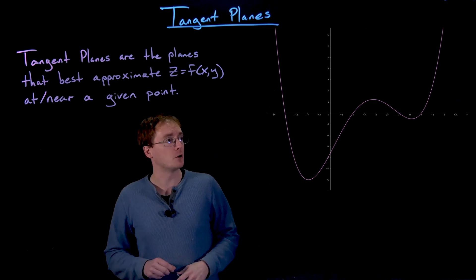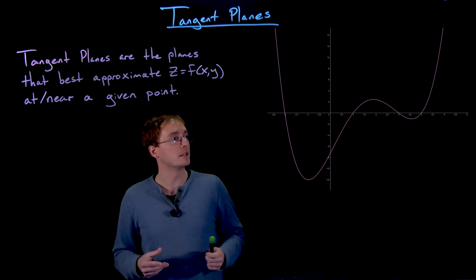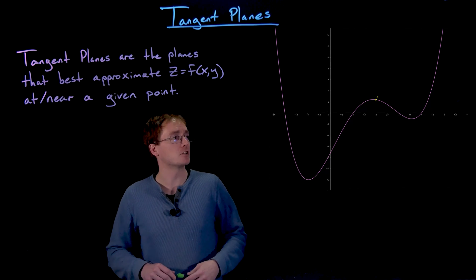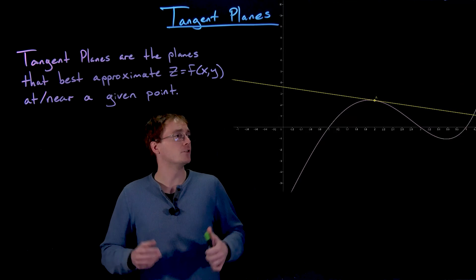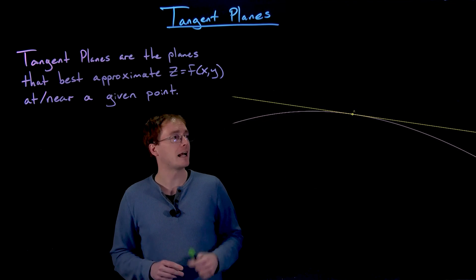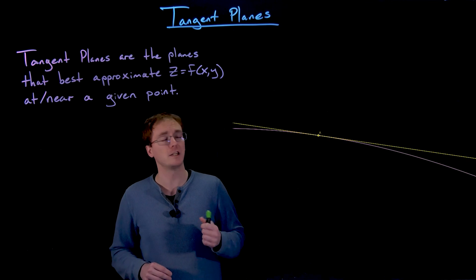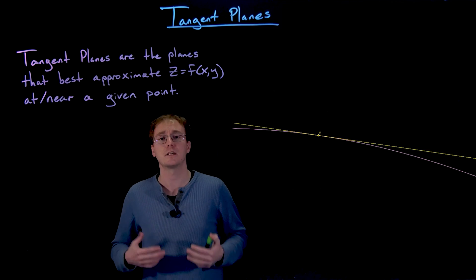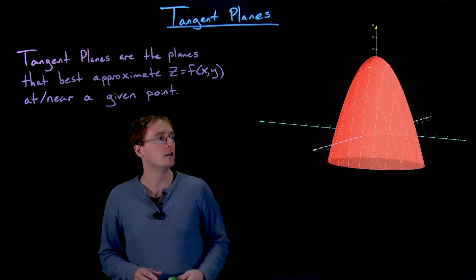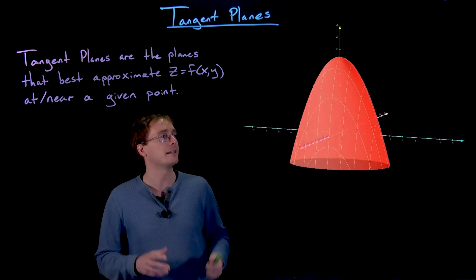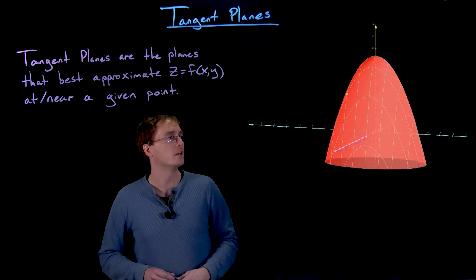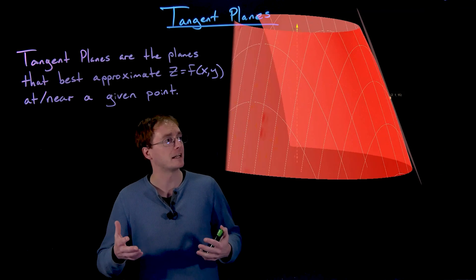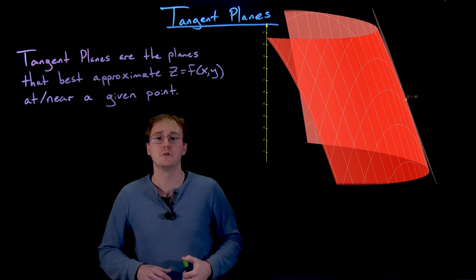Here are a couple animations from GeoGebra illustrating this. We can see our single variable function, a single point on the curve, and we graph the tangent line to our curve at that point. As we zoom in, the difference between our function and the tangent line gets smaller and smaller — the tangent line is essentially approximating our function. Here's that same process done in three dimensions with a two-dimensional surface and a tangent plane. We zoom in and eventually the surface and the tangent plane look like the same thing, though that's only true when we're close enough to our point.